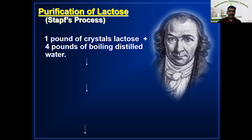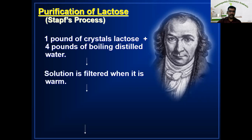In Stab's process, one pound of crystal lactose — that is the commercial lactose — is added with four pounds of boiling distilled water. It will dissolve in the boiling water. The solution is then filtered while it is still warm.